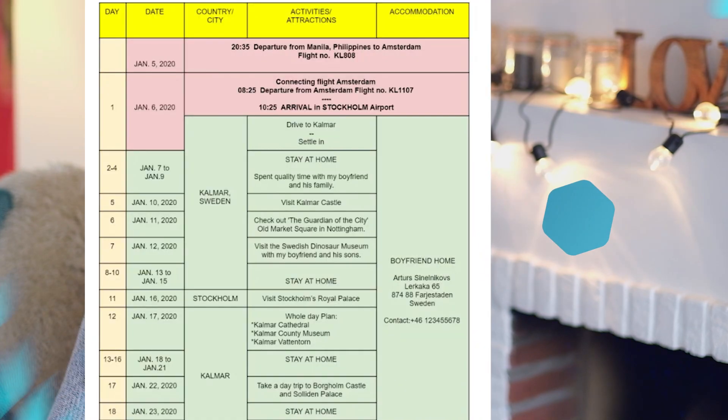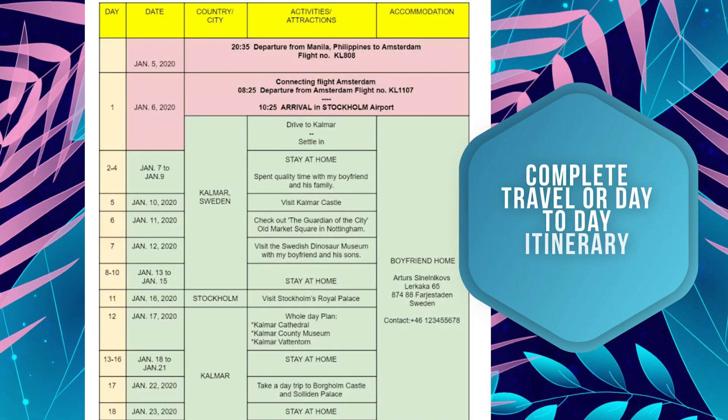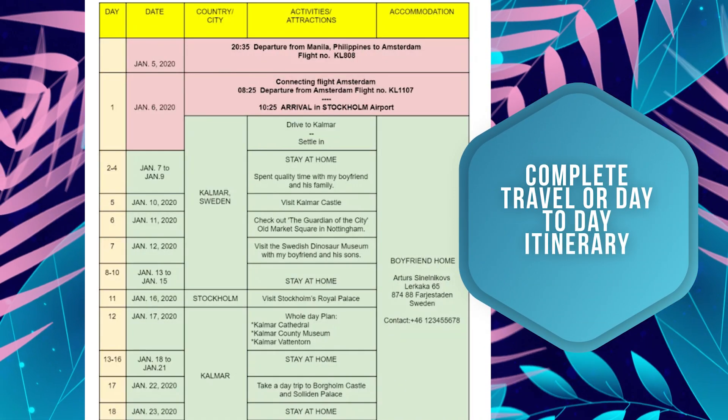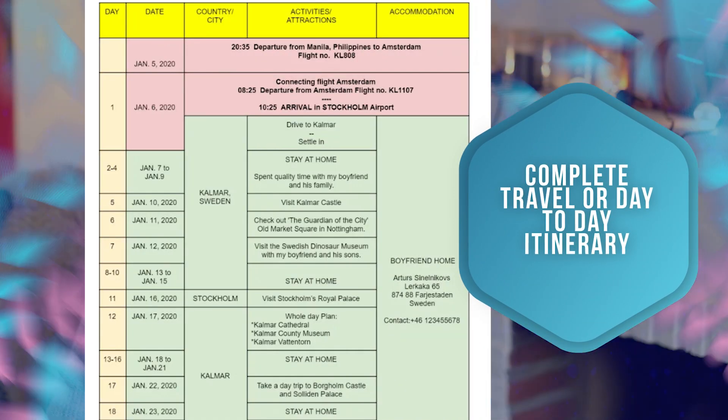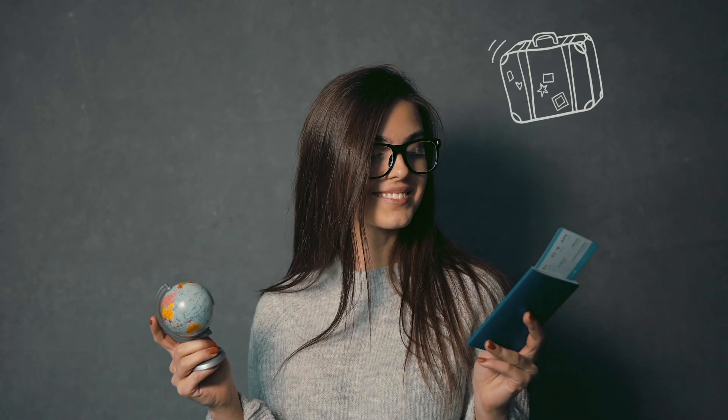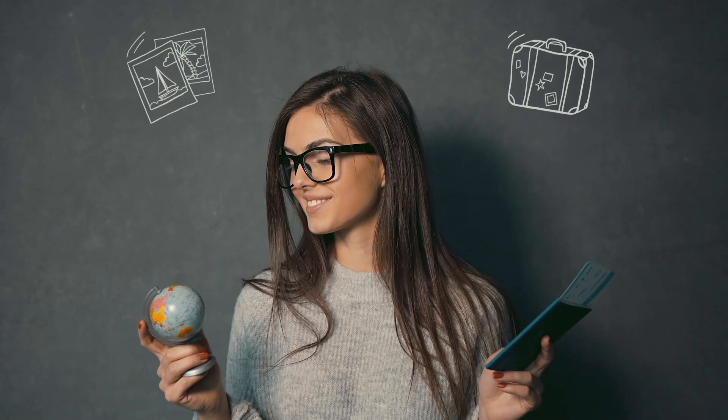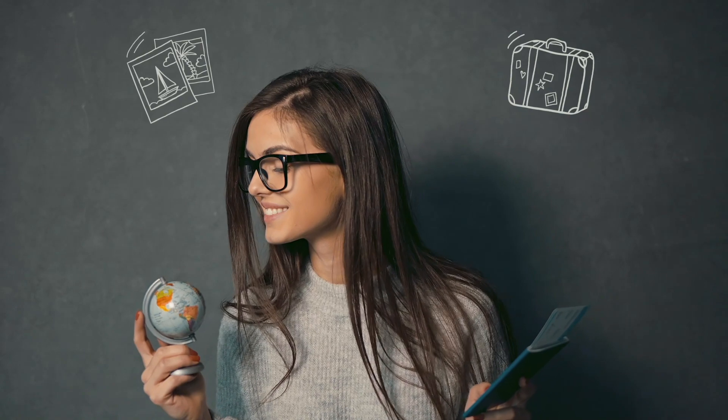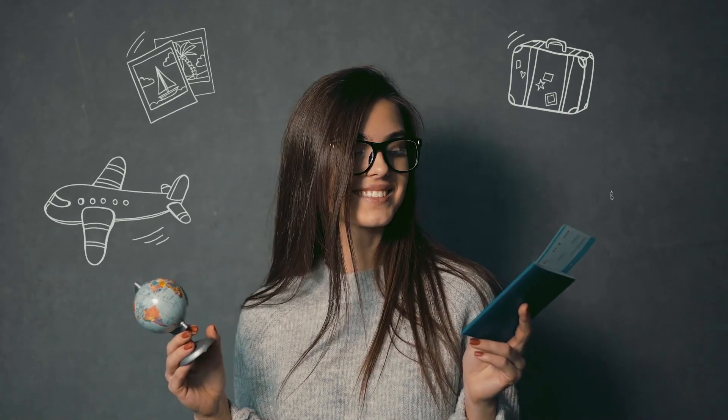The next standard requirement is a complete travel or day-to-day itinerary. For a tourist visa, this is very important because they need to know what activities you are planning to do in Norway — the places you want to visit and which hotels you'll be staying at.